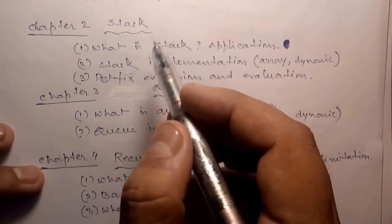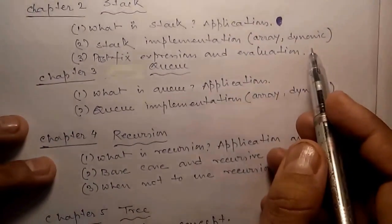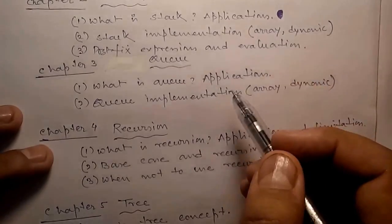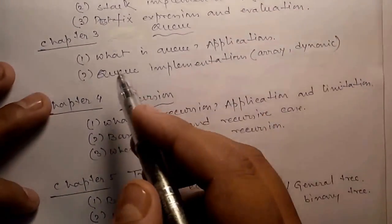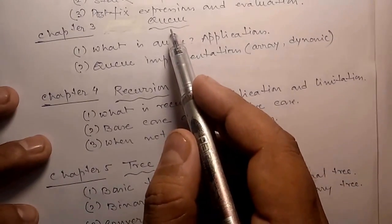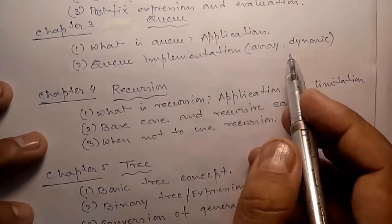In Chapter 3, we discuss queue: what is queue, applications, queue implementation using array and dynamic memory. In Chapter 4, recursion: what is recursion, application and limitation of recursion. We will discuss base case and recursive case.